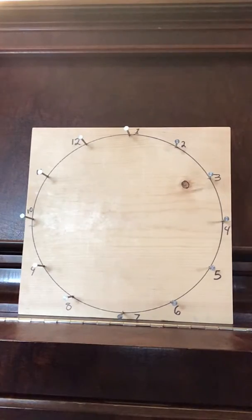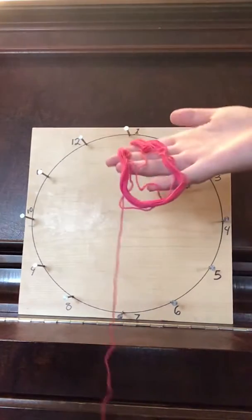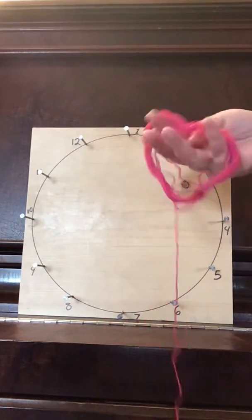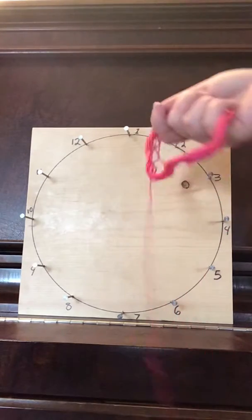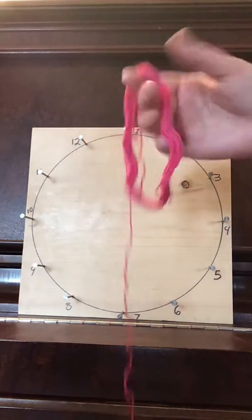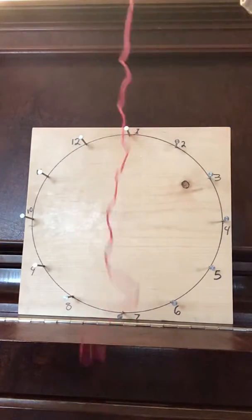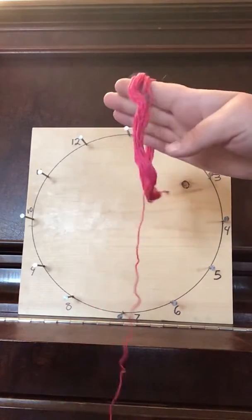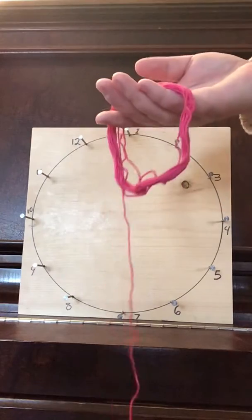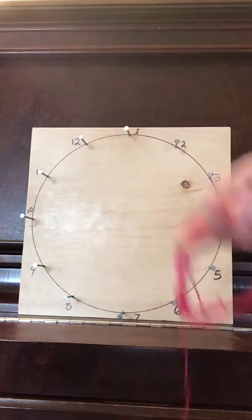So for this part, you're going to need some string. Now you can use anything that's around the house. I'm going to use a combination of yarn. I have this pink thread from another project left over, so I'm going to use this pink thread. You can use anything you have, twine, even ribbon would work.